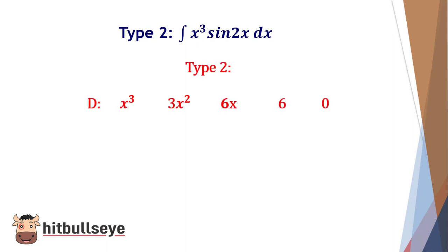The first part will be differentiation of the first expression. You have to copy x³ and keep differentiating till you get zero. So x³ will be differentiated as 3x², then 6x, then 6, and finally zero.